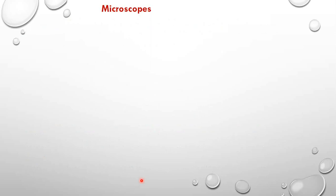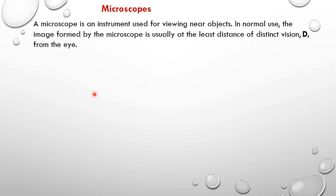Let's look at microscopes. A microscope is an instrument used for viewing near objects. In normal adjustment or normal use, the image formed by the microscope is usually at the least distance of distinct vision D, abbreviated as capital D, from the eye.